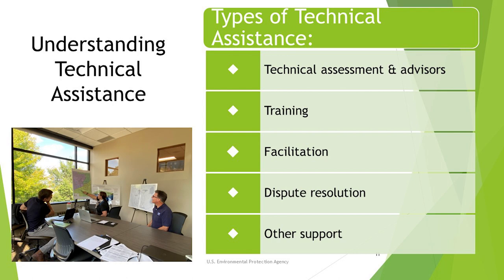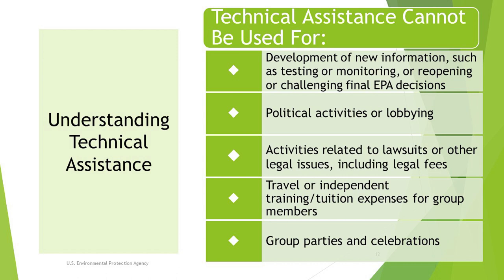Technical assistance also includes dispute resolution services to help resolve conflicts among CAG or community members, or between EPA and a community, to ensure all interests are identified and addressed through discussions and mediation among conflicting parties, and other types of support that can help with the operation of a CAG. Technical assistance cannot be used for developing new information such as testing or monitoring, for reopening or challenging final EPA decisions, for political activities or lobbying, for activities related to lawsuits or legal issues including legal fees, for group members' travel or independent training or tuition expenses, or for group parties or celebrations.